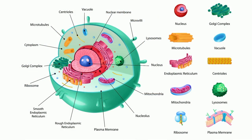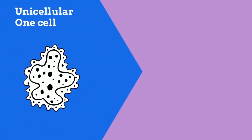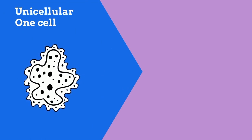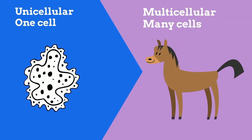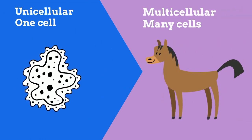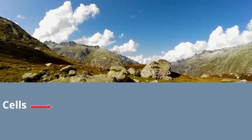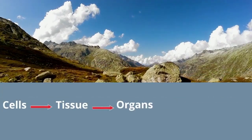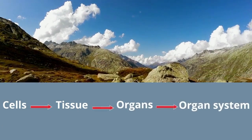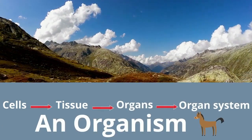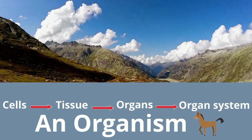Let's take a look at them. Living organisms can be made up of one cell, which is called unicellular, or many cells, which is called multicellular. Life also has levels of organization: cells make tissues, which make organs, which make organ systems, which make organisms. Let's take a look at these levels of organization.